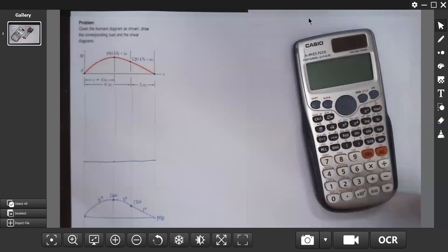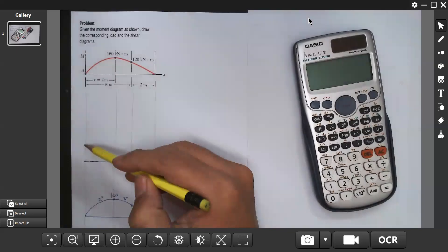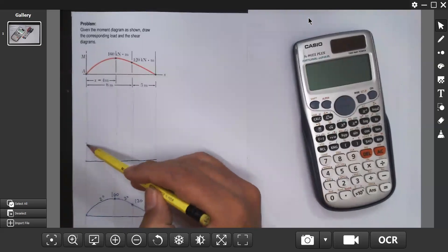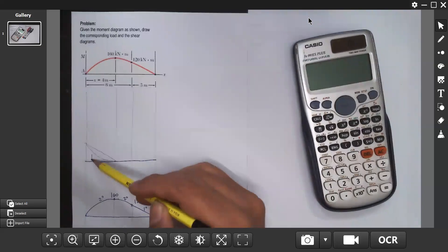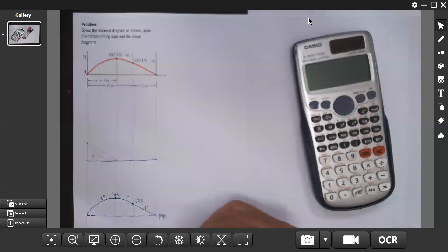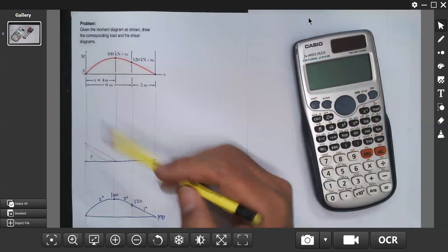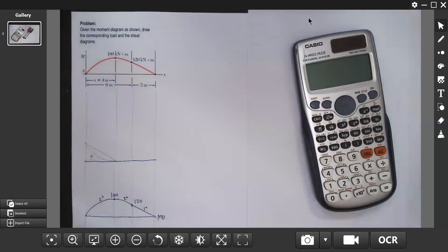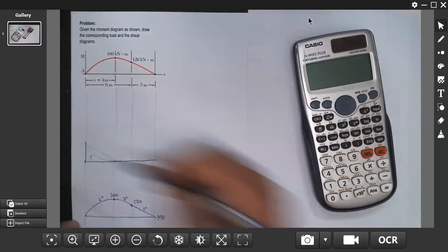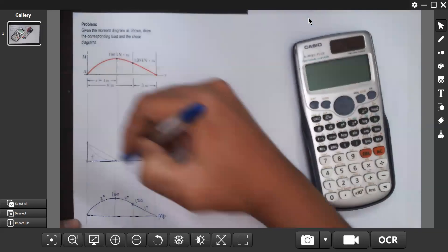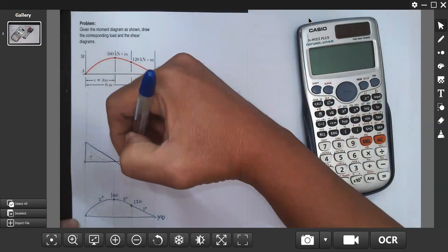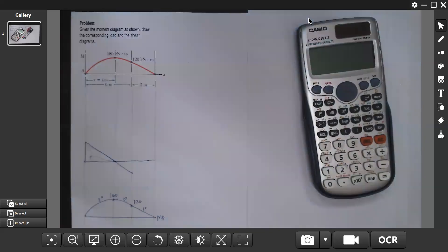If it's second degree concave forward, it's not consistent. Therefore the correct diagram is this one. So we have, and then it goes to zero shear, straight line, because second degree.